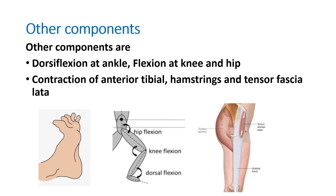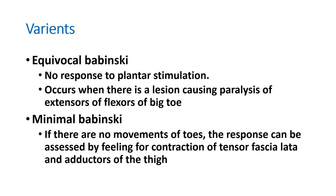Along with the dorsiflexion of toes and flexion at the ankle, knee, and hip joints, you can also get contraction of the anterior tibialis, hamstrings, and tensor fascia lata. Sometimes, if toes are amputated, you can still assess the response by feeling contraction of the tensor fascia lata, flexion at the ankle and knee joints, and contraction of the hamstrings.